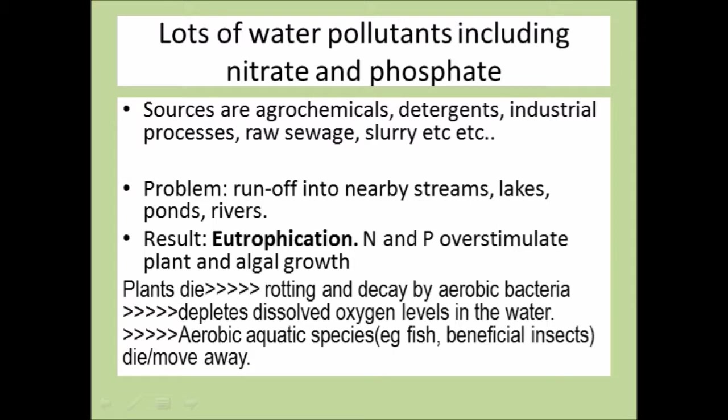And algae particularly have a very short life cycle. They die. They sink down into the water. The remains sink into the water and start to rot. And they're decayed by the activity of water living aerobic bacteria. And the bacteria multiply like crazy because there's so much food for them. And in doing so, they actually take up too much of the dissolved oxygen from the water, leading to semi anaerobic conditions forming. And the result of this is to actually cause beneficial species, aerobic species that live in water, fish, beneficial insects to actually die and move away. That's eutrophication.